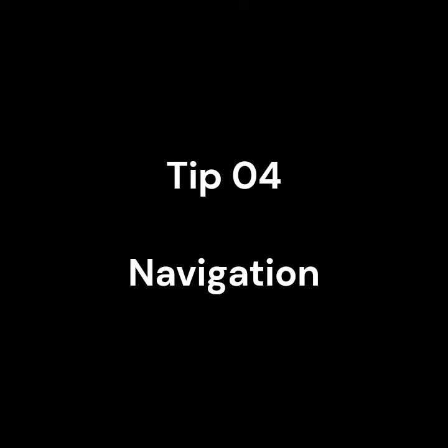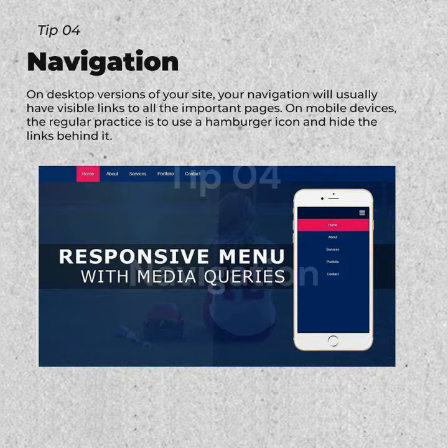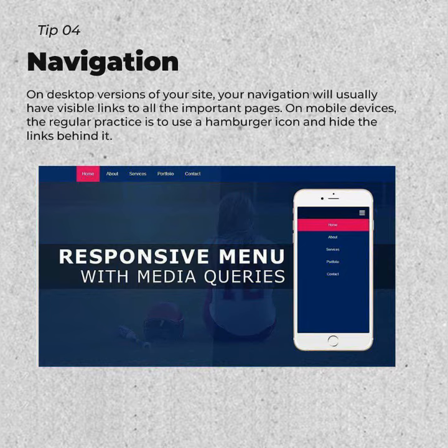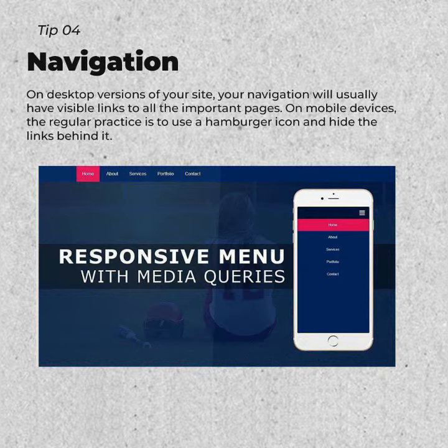Tip 04: Navigation. On desktop versions of your site, your navigation will usually have visible links to all the important pages. On mobile devices, the regular practice is to use a hamburger icon and hide the links behind it.